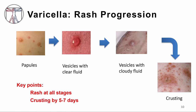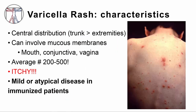Looking around, you'll see some papules, vesicles with clear or cloudy fluid, mixed in with crusting lesions, until the immune response completely controls the infection. Other characteristics include a central distribution, meaning more lesions on the trunk and abdomen than on the arms or legs. Varicella can also involve mucous membranes like the mouth, conjunctiva, or vagina. The average number of lesions is between 200 and 500, and secondary household cases may have more severe disease — sometimes over a thousand lesions. In immunized patients, varicella may be very mild with only a few papules and minimal crusting.